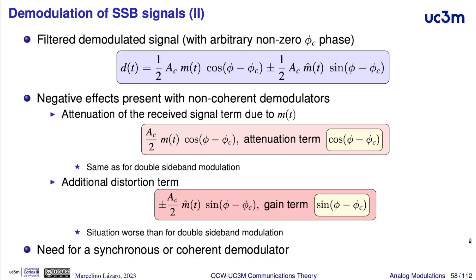Again, the optimal choice is to have a synchronous receiver — one where the receiver phase equals the carrier phase — giving sine of zero, which is zero. This makes evident the need for a synchronous receiver: to eliminate the attenuation of the modulating signal and to remove the distortion term proportional to the Hilbert transform of the modulating signal.